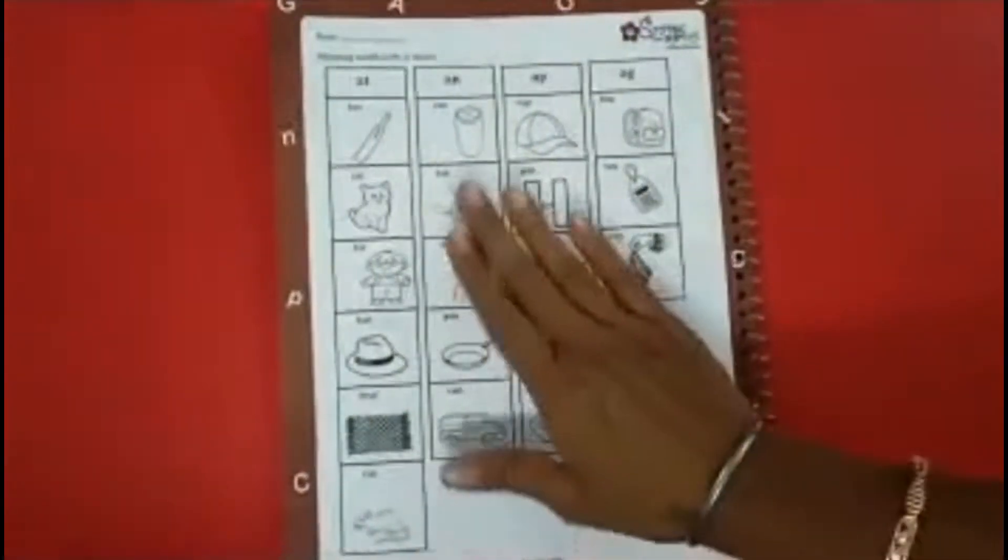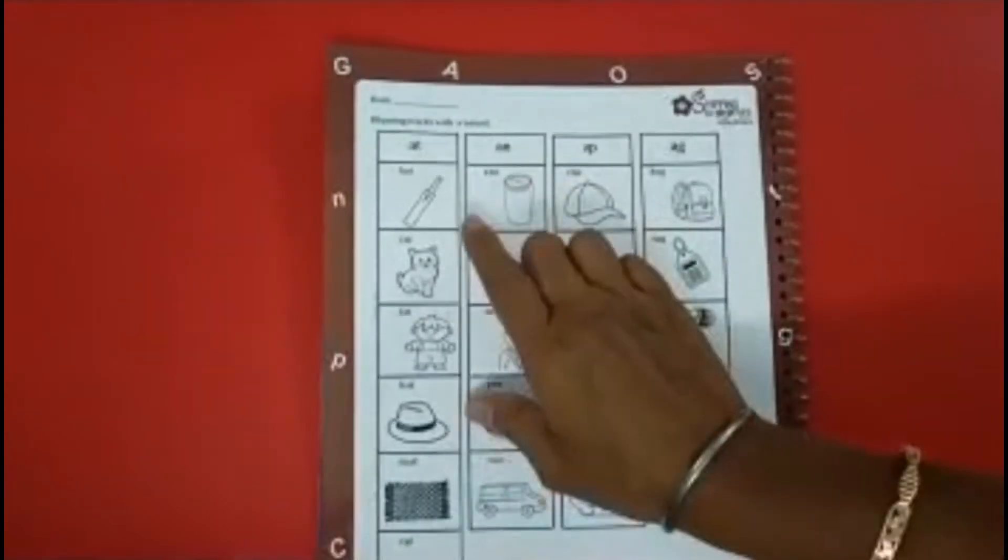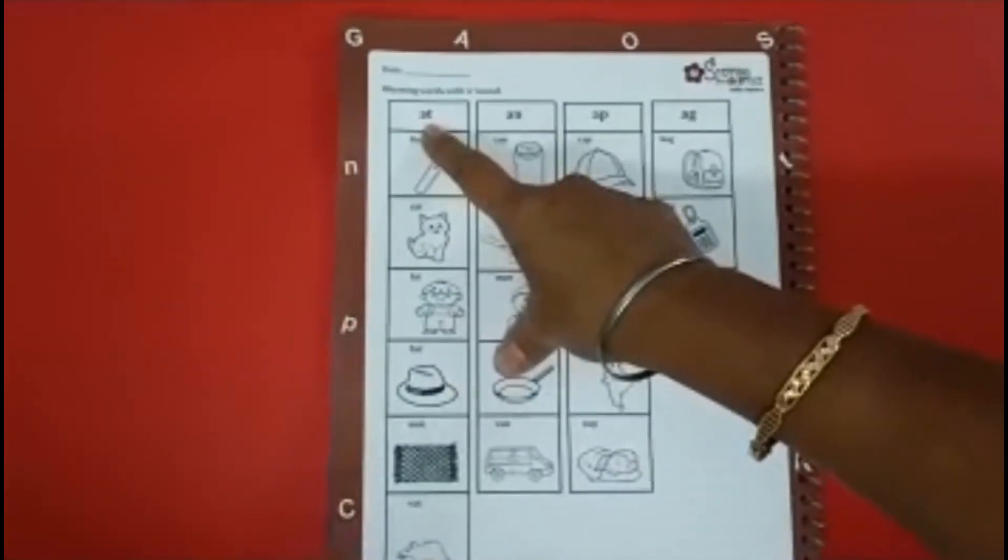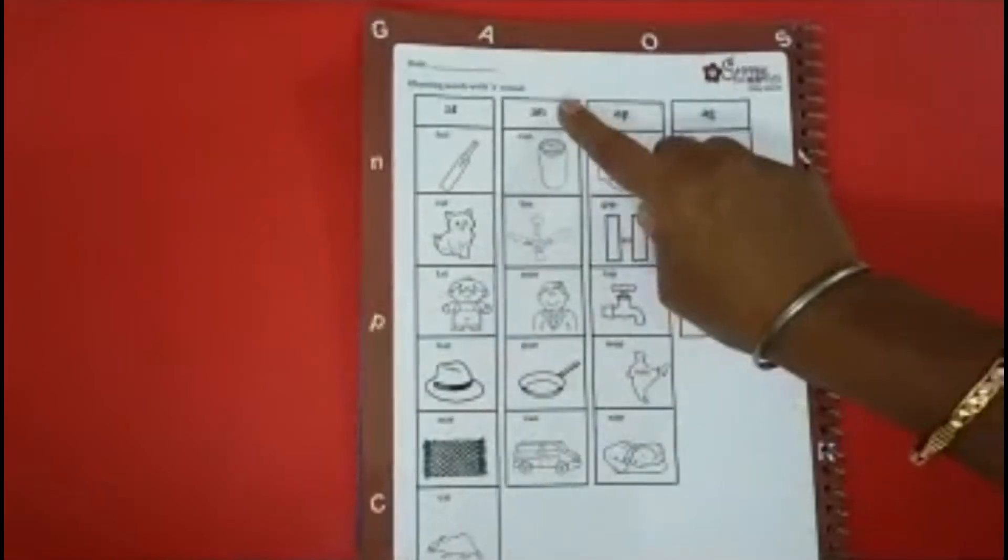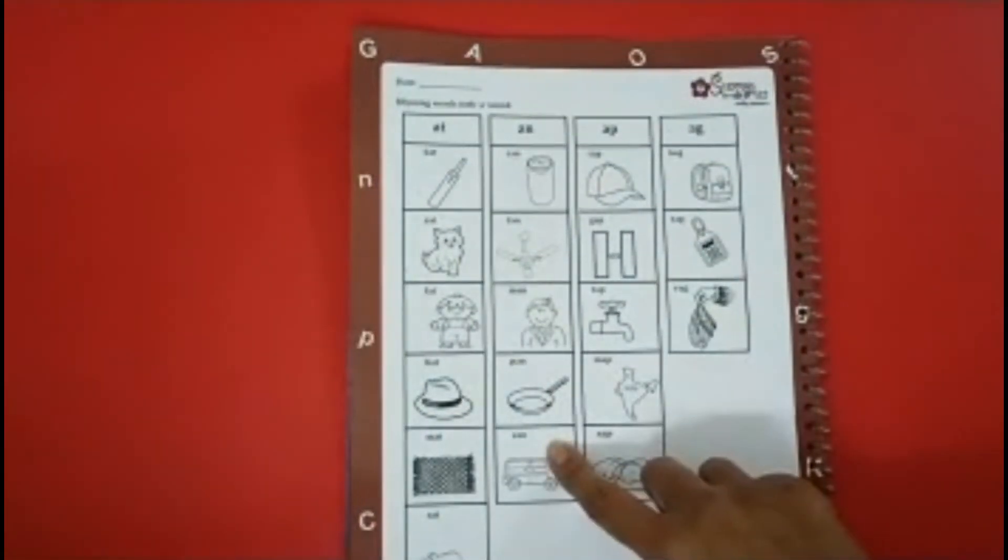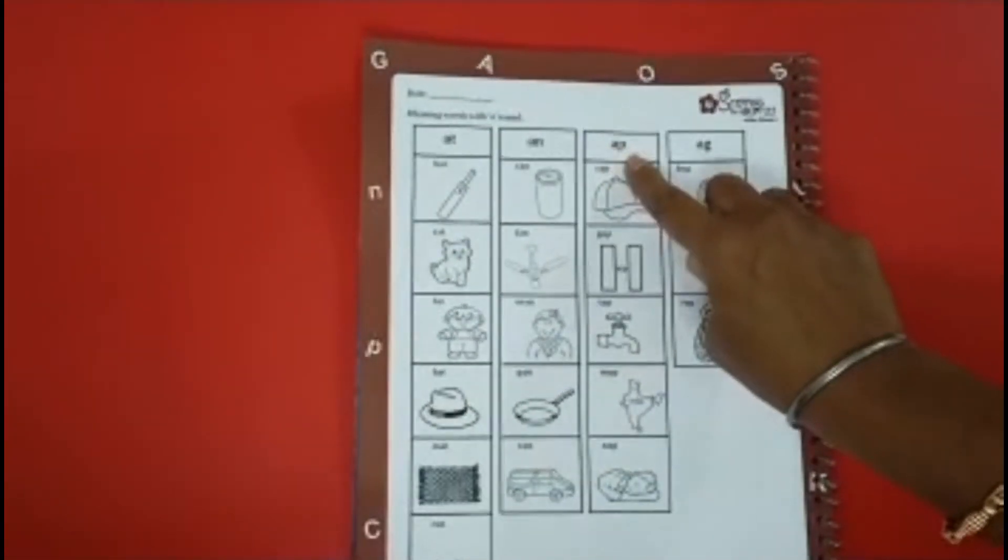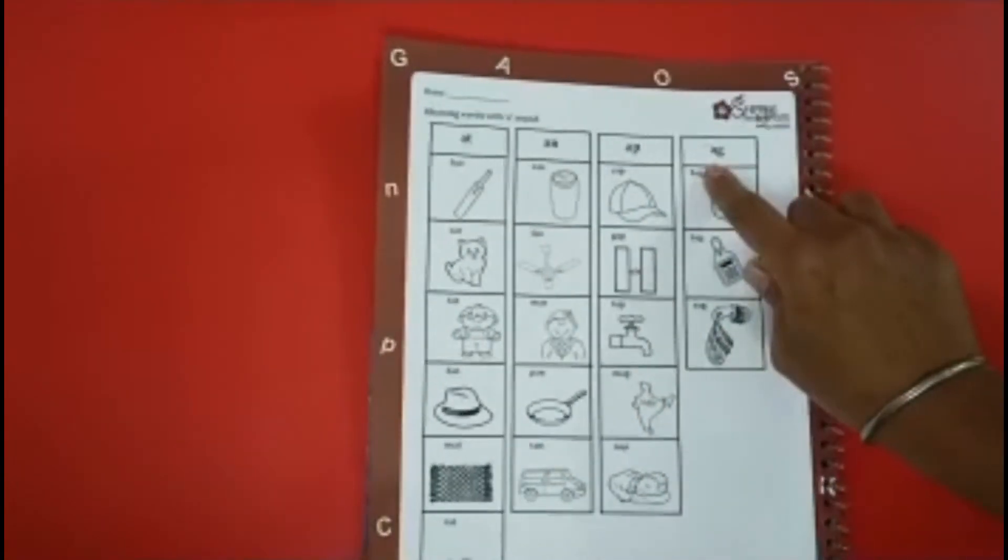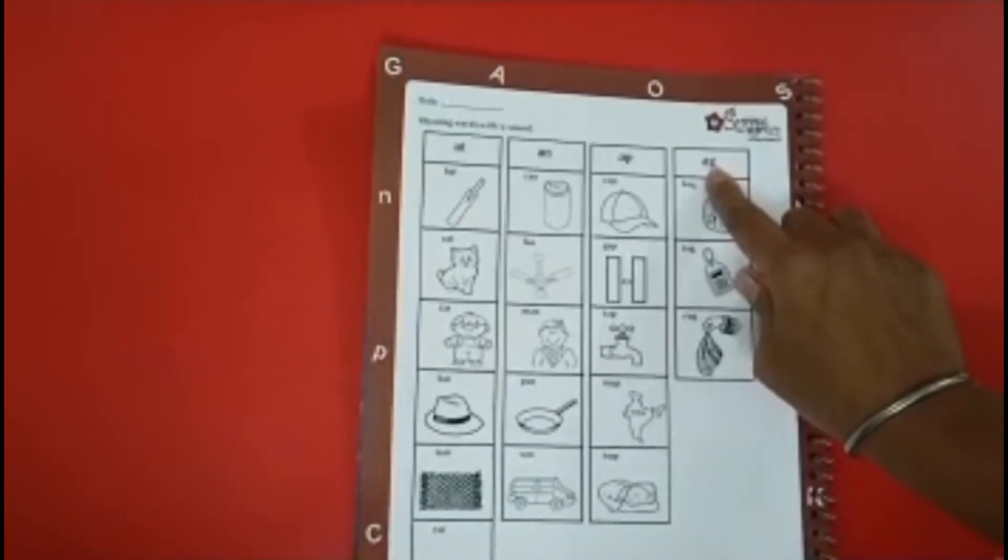Let's see some more words of A sound, okay? These are, at sound words, end sound words, app sound words, and A, G, ag sound words.